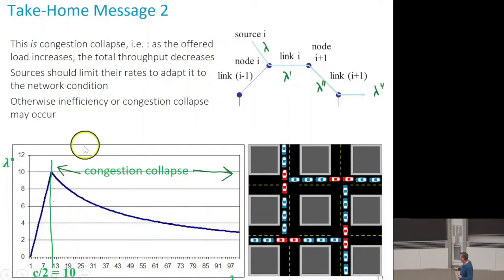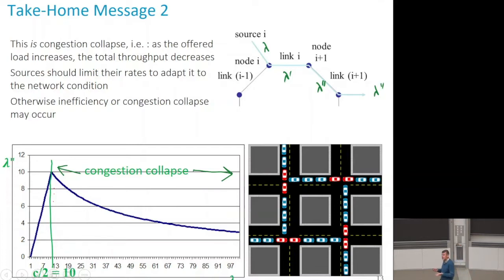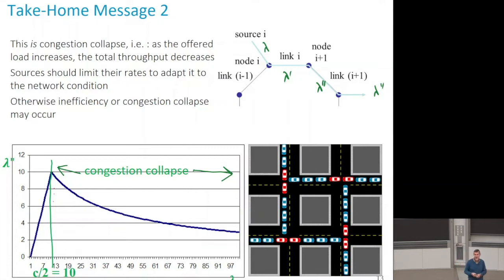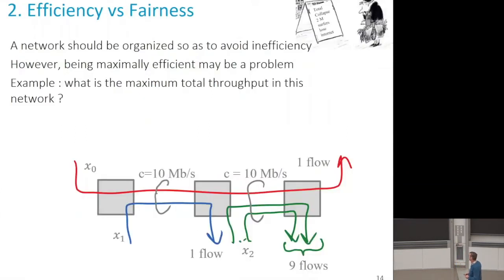In this simple example, if we were an oracle, we would instruct every source to send no more than C over 2, and everybody would have C over 2. Every source would be frustrated — it gets C over 2 instead of lambda — but less frustrated than receiving only lambda second. So a good congestion control mechanism should provide a horizontal line: it should allow the network to operate at its capacity and not collapse. But as we will see, doing that poses a number of problems.